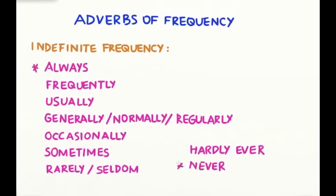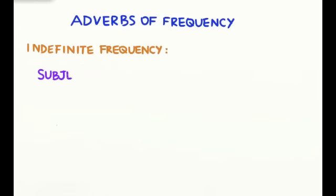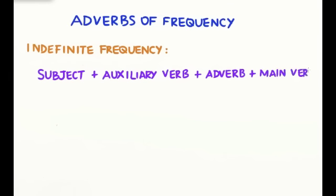Always, of course, is the most frequent, and never is the least frequent. The formula for adverbs of frequency is subject plus auxiliary verb or helping verb plus adverb plus main verb.